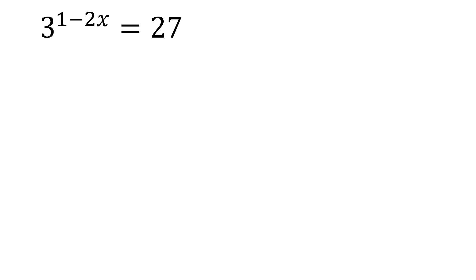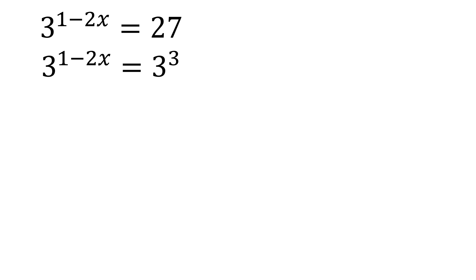The first thing to do is to find a way to make the bases the same. We copy the left side: 3 to the power of 1 minus 2x. On the other side, we change its form so the base is 3. So 27 can be written as 3 to the power of 3. How? Because 3 to the power of 3 means 3 times 3 times 3. 3 times 3 is 9, and 9 times 3 is 27. So 27 is equivalent to 3 cubed.